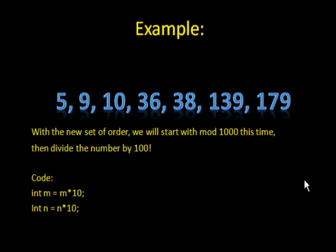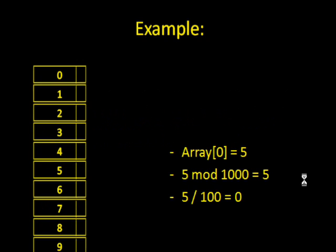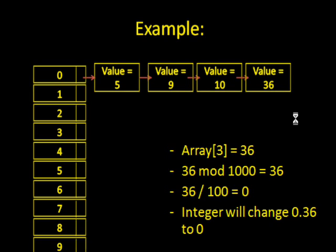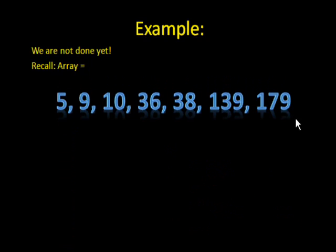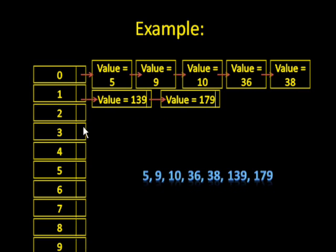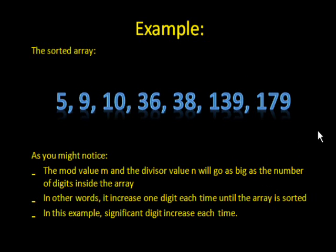To do that, we multiply m and n by 10 and continue the same way we did before. We put in 5 first — 5 mod 1000 is 5, and 5 divided by 100 is 0. I'm not even going to explain the rest because by this point you know what we're doing. So now we have 149 and 179 left — those will be the only ones that don't go in the zeros column, because if you mod them by 1000 and divide them by 100, you would get 1. Now we have to put them back in the array by the same way we've done it before, putting them in one at a time in the order they are: 5, 9, 10, 36, 38, then 149 and 179. Now we are done, and the sorted array we have here in front of us is complete.